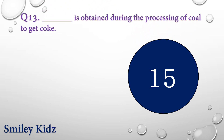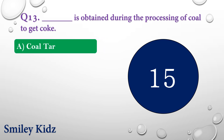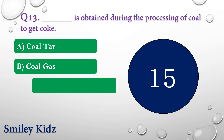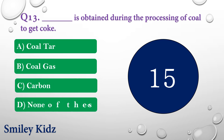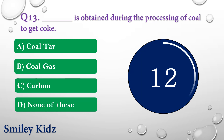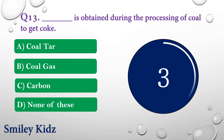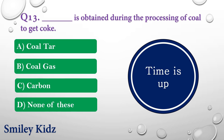Question number thirteen: Dash is obtained during the processing of coal to get coke. The options are: A) Coal tar, B) Coal gas, C) Carbon, or D) None of these. Your time is up and the right answer is option B — Coal gas. Coal gas is obtained during the processing of coal to get coke.